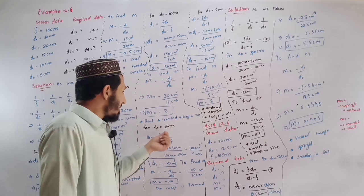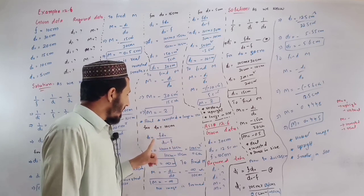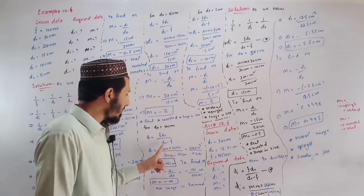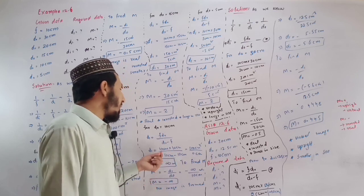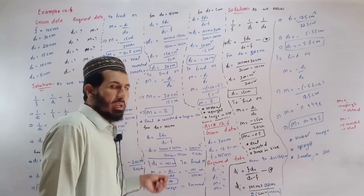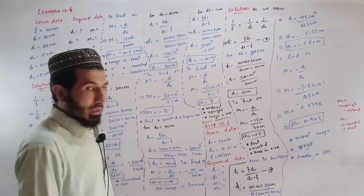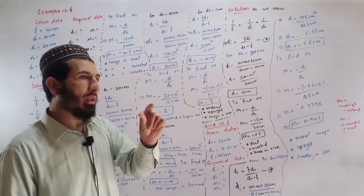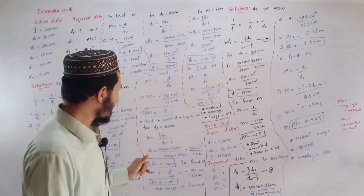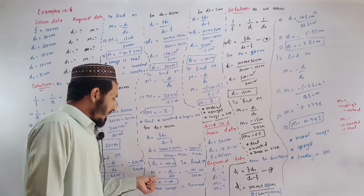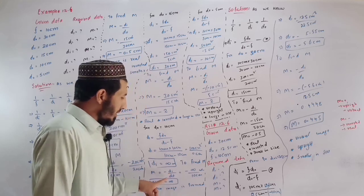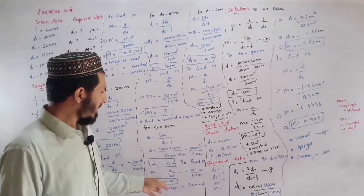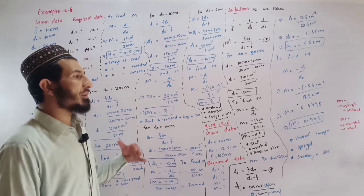With d0 10 cm, di equals f times d0 divided by d0 minus f. Di equals f is 10 cm multiplied by d0 10 cm. d0 is 10 cm, so di is infinity. The rays are parallel. No image is formed.